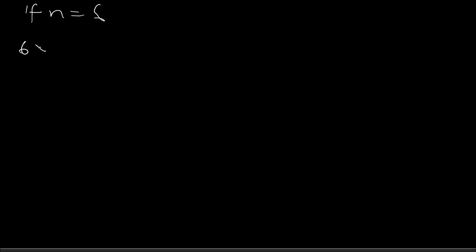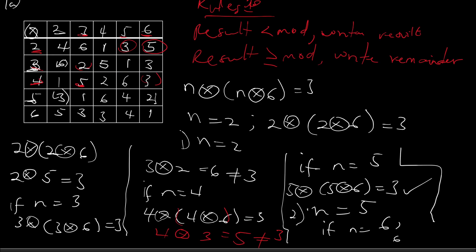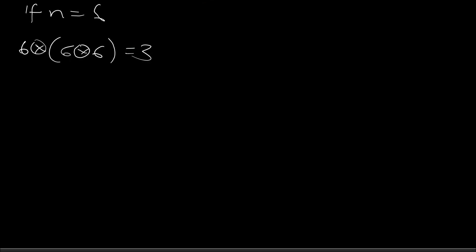Now let's check n equals six. Six times (six times six) should equal three. Six times six is one, and then six times one — there is no six times one in our set, so six doesn't qualify as a solution. This brings us to our truth set: n equals two and n equals five.